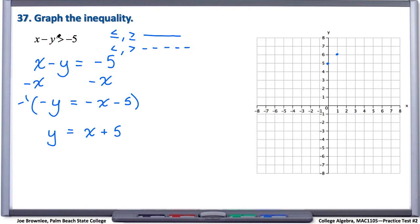In this case, because our inequality is greater than, we're going to connect our points with a dashed line.